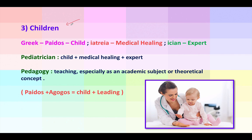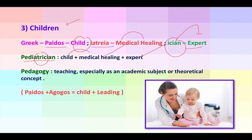Now let's talk about children. Whenever they go to doctors, they always cry — probably from fear of injections. The Greek word paidos means child, iatria means medical healing, and '-ician' means expert. So a pediatrician has all three: child, medical healing, and expert. A pediatrician is a doctor who specializes in diseases of children. These doctors are very specialized in treating children — they have studied child psychology in detail, which helps them first win the child's trust before treating them.